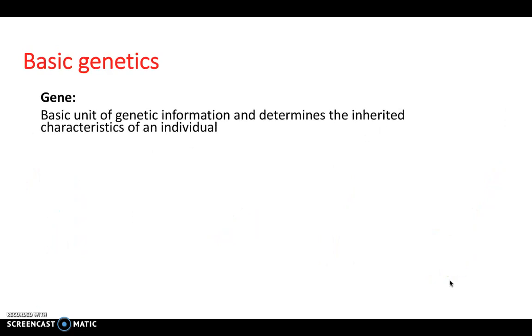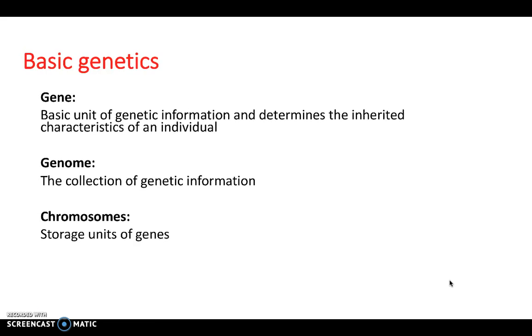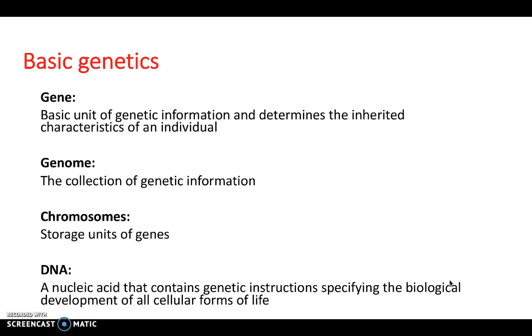So, a gene. This is the basic unit of genetic information, and determines the inherited characteristics of an individual. The genome is the collection of all the genetic information. And chromosomes are storage units of these genes. And then we break it down to DNA. So this is a nucleic acid that contains genetic instructions specifying the biological development of all cellular forms of life.